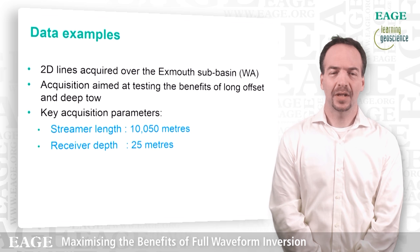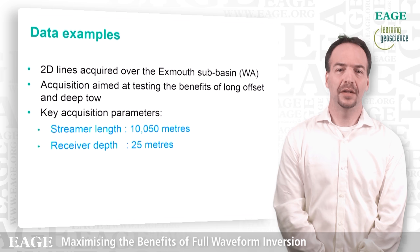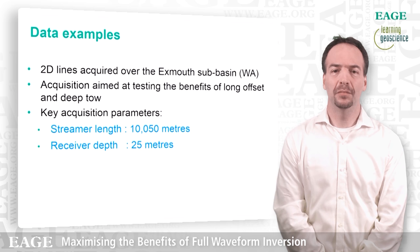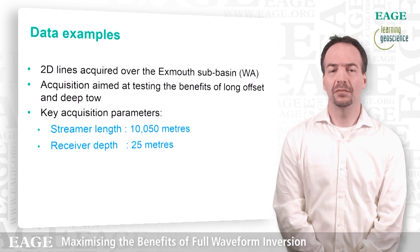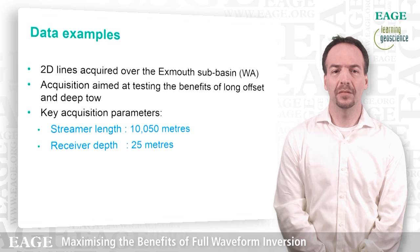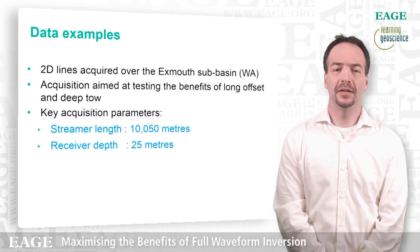The data examples I'm going to show today are coming from 2D lines acquired over the Exmouth sub-basin in Western Australia. The acquisition aimed at testing the benefits of long offset and deep tow. The long offset is essential in FWI in this current implementation because we try to invert mostly diving waves. The diving wave depth of investigation is strictly related to the length of the offset — the longer the offset, the deeper our investigation with FWI can go. The deep tow is also important because it allows us to acquire data away from the swell zone and acquire data that are richer in low frequency and cleaner. The streamer length was about 10 km and the receiver depth was 25 m.